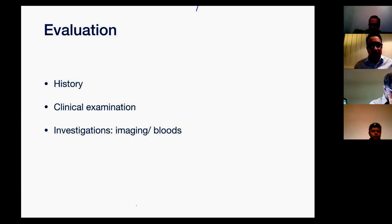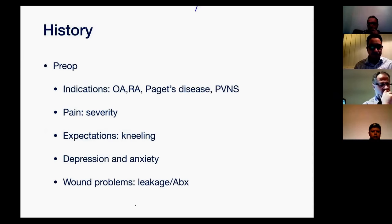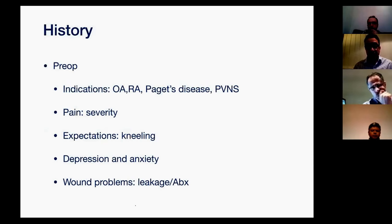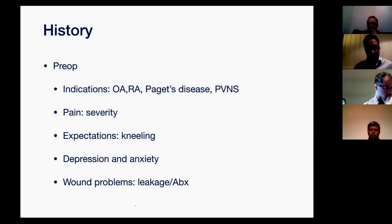When faced with this situation, how do you evaluate? If you know the causes, you know what to look for in history, clinical examination, and investigation. For history, go back to the pre-op history: what was the indication for the total knee replacement — was it rheumatoid arthritis, Paget's disease? How bad was the pain before and after the operation? Consider patient expectations — some patients are frustrated because they can't kneel after replacement. Patients with depression or anxiety are less likely to be satisfied. Inquire about wound problems early post-op: any leaking wound or antibiotics prescribed by the GP, which may indicate infection.